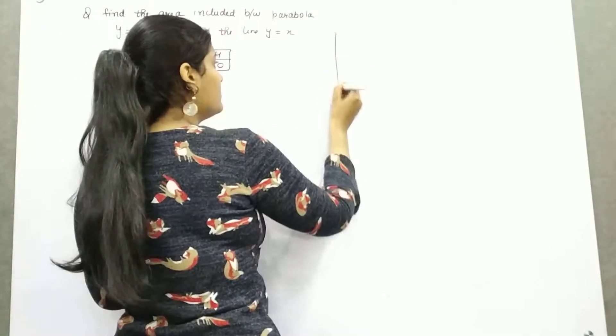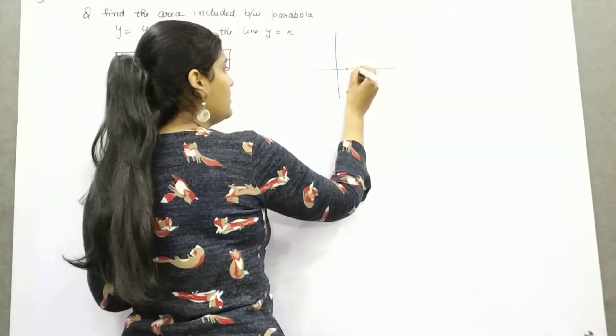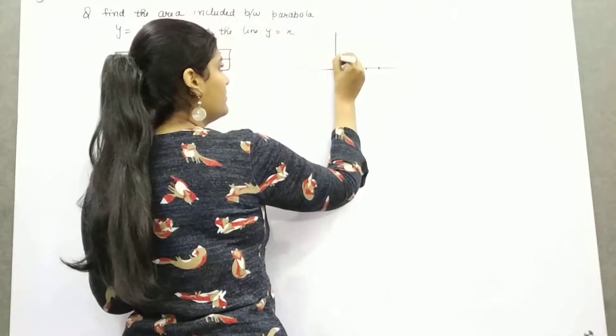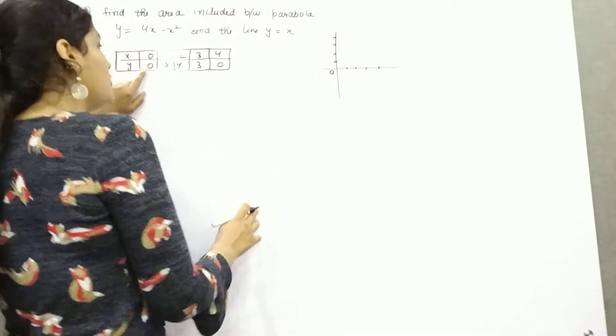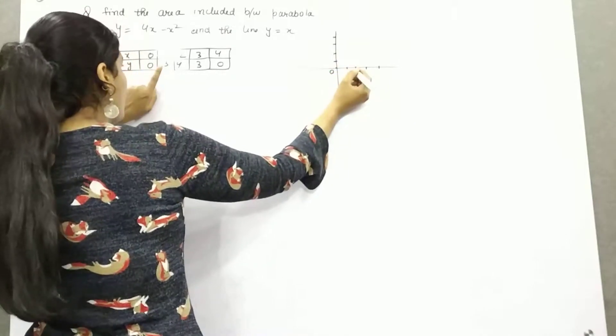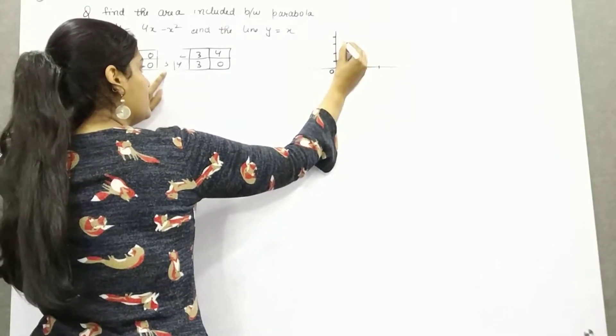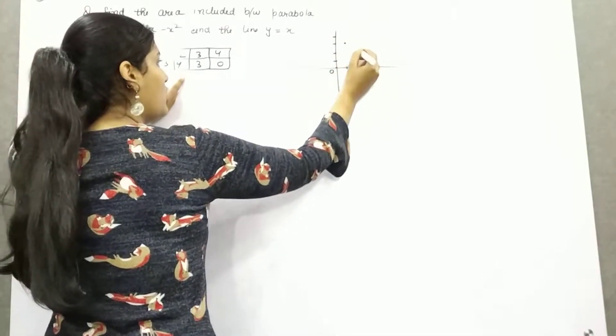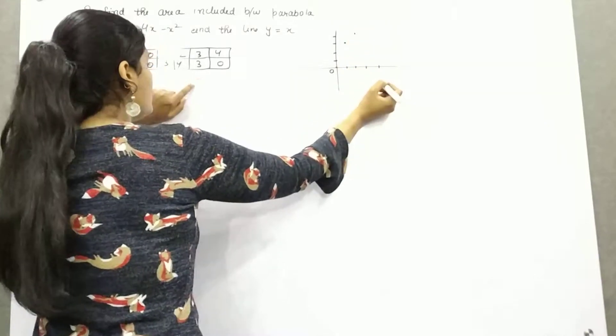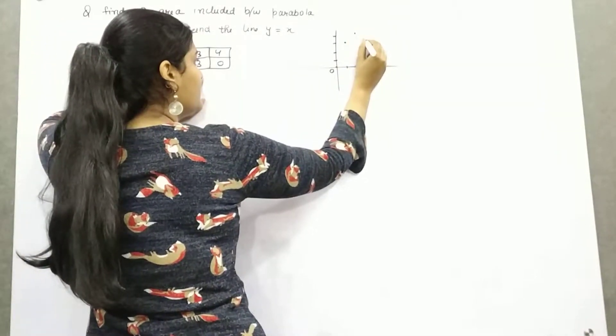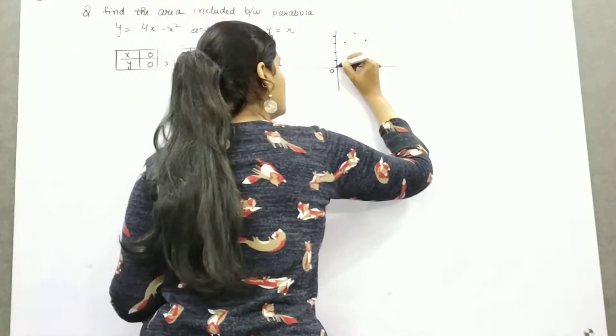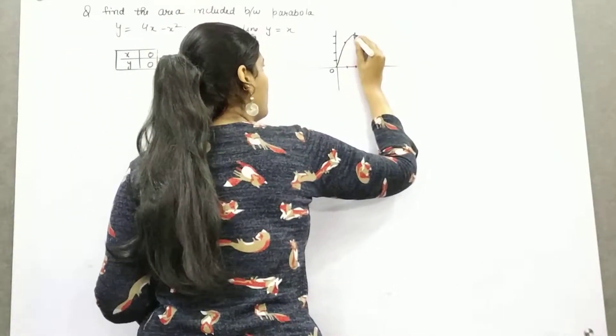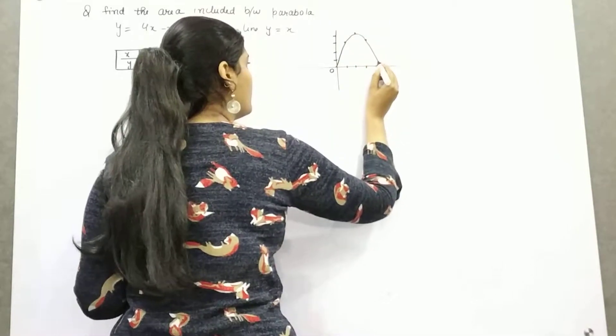So let me mark here 1, 2, 3, 4. So (0,0) is here, (1,3) is here, (2,4) is here, (3,3), and (4,0). So this is a parabola of the form like this.